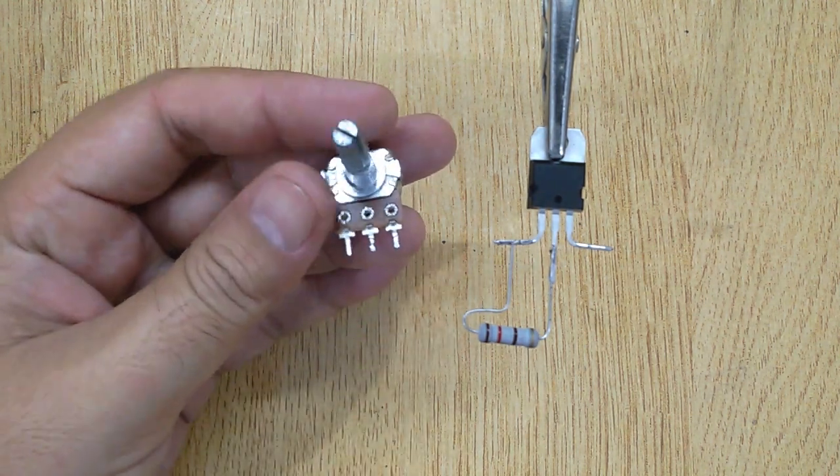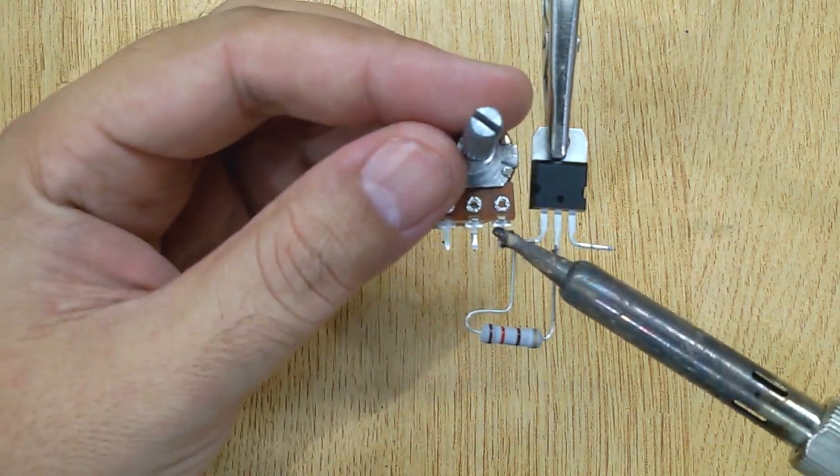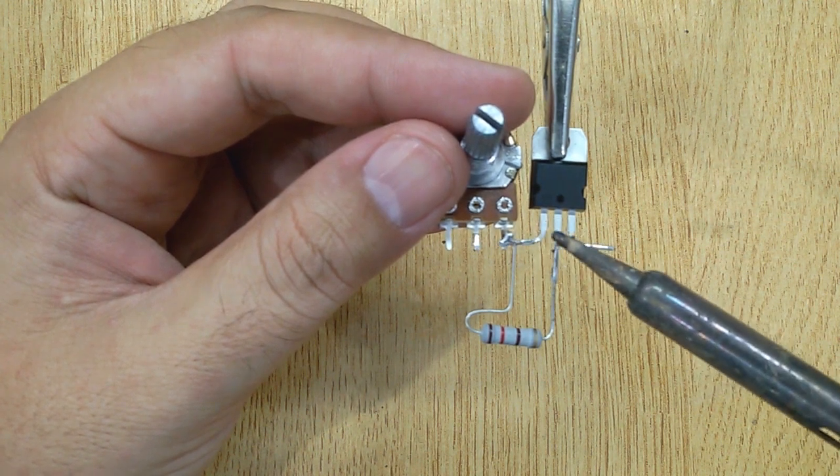After that, solder the VCC pin of 10 kilo ohms potentiometer with the first pin of transistor LM317.